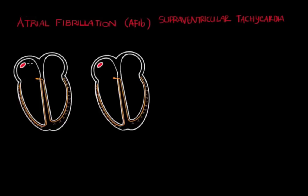In a normal heart, electrical wavelets are conducted from the SA node to the AV node in an organized fashion. And since you have organized conduction going from the SA node to the AV node, you're going to get concentric or unified contraction of the atrial tissue.